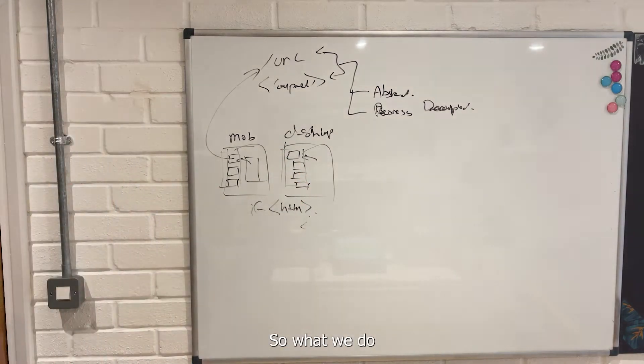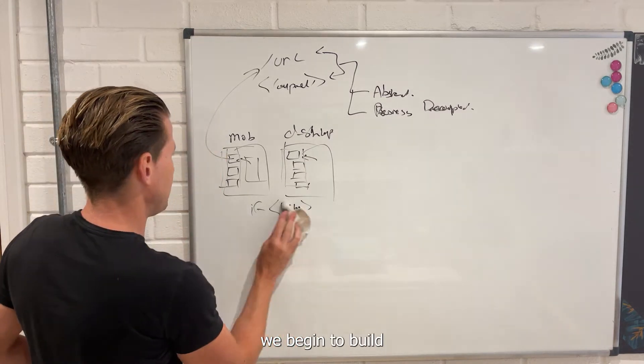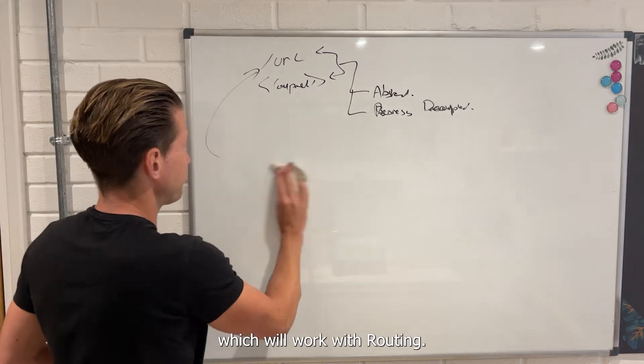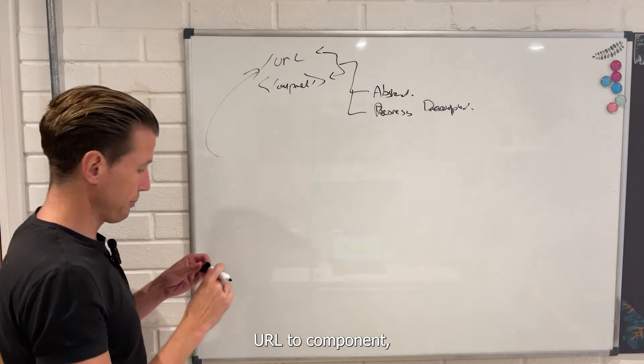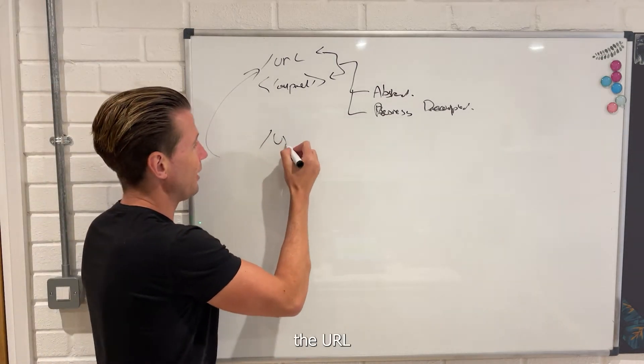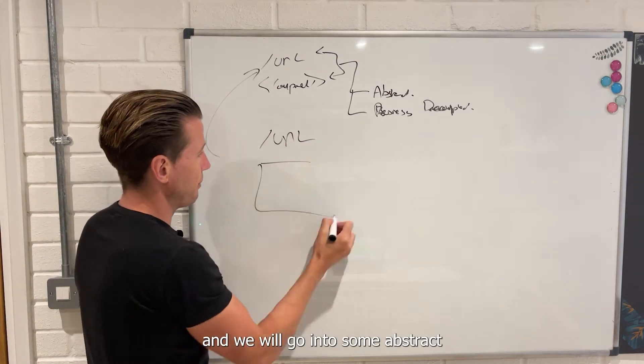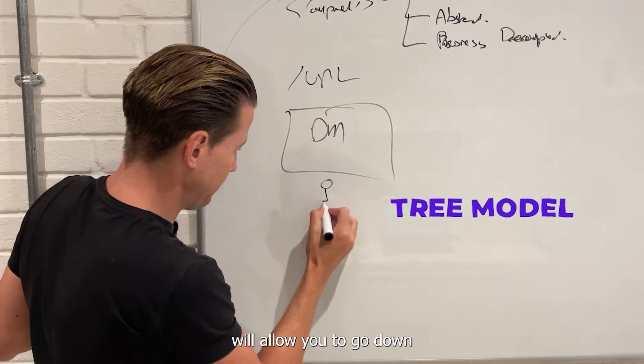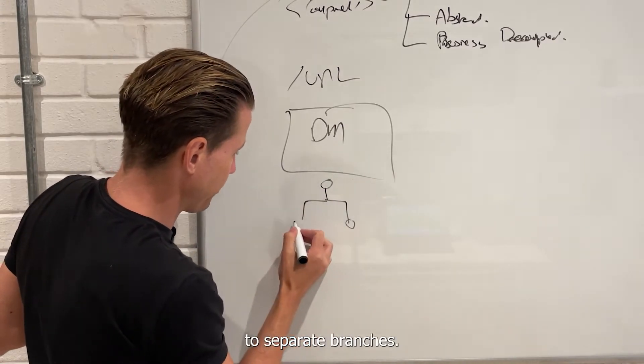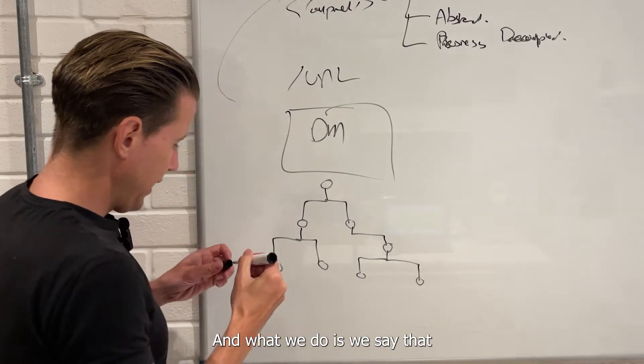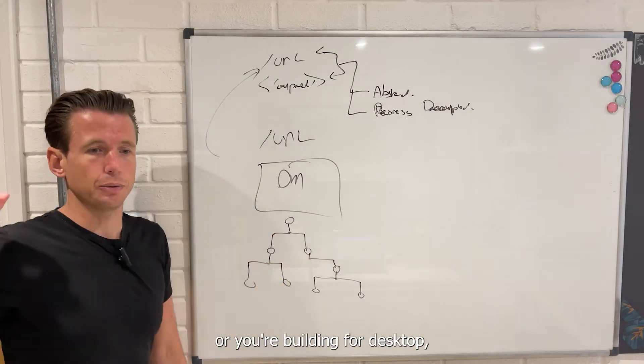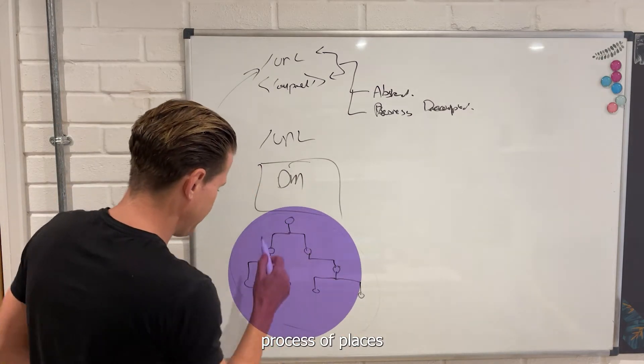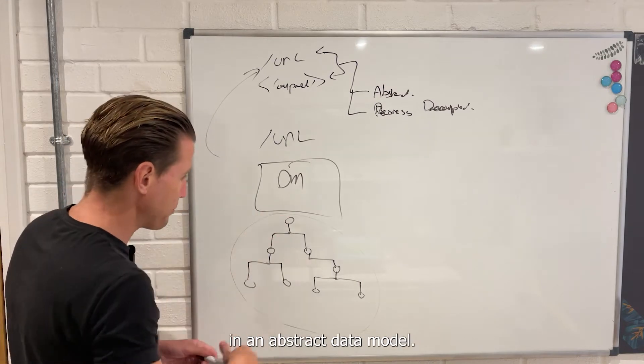So what we do instead is we begin to build something called an abstract navigation system, which will work with routing. Instead of going directly from URL to component, what we will do is we'll go from the URL and we will go into some abstract data model. The data model that we teach is called a tree model. The tree model will allow you to go down separate branches.